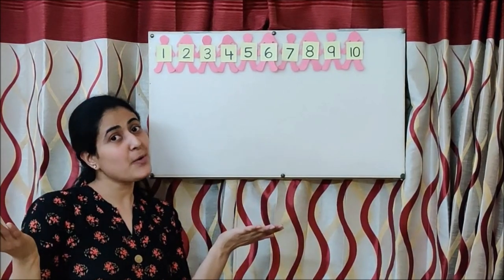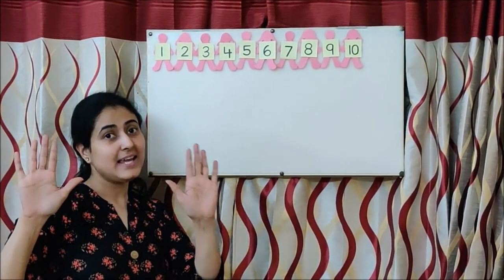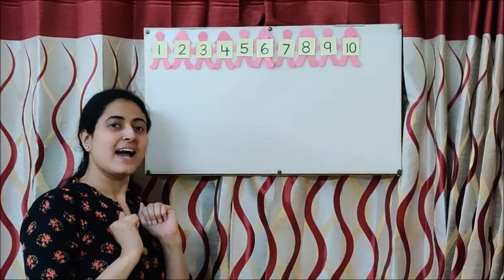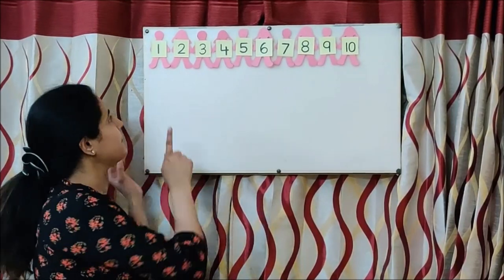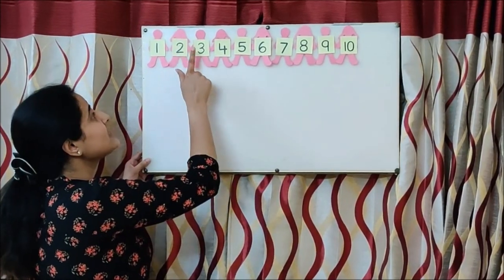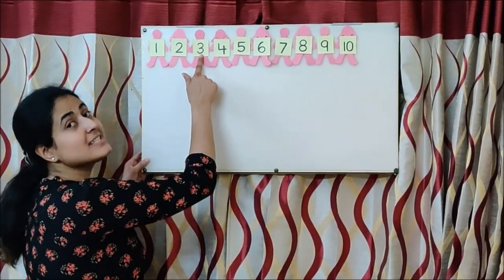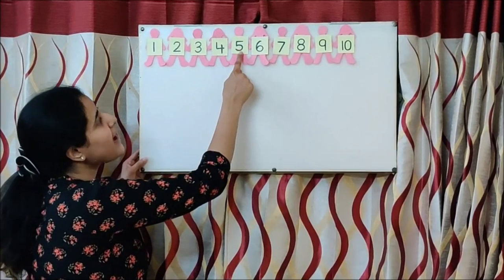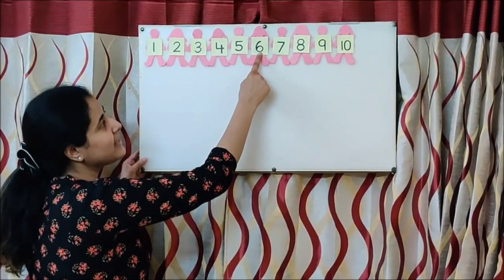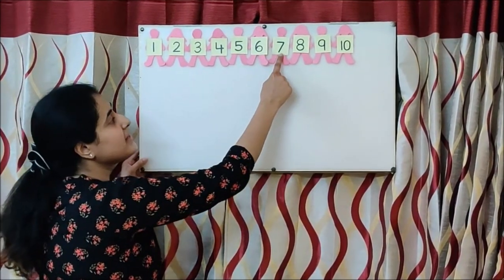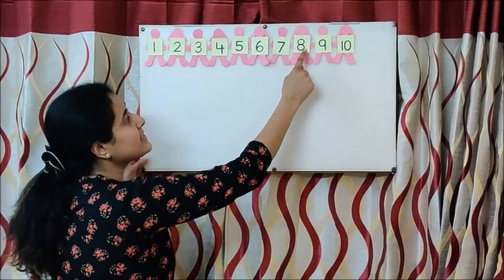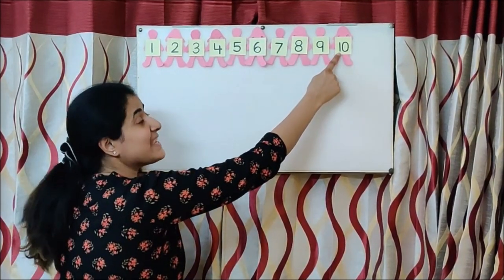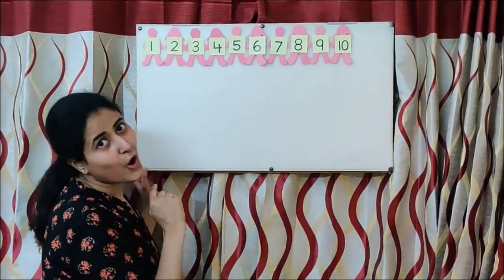And this is our poem. Ten Little Indians. So now let us sing again: One little, two little, three little Indians. Four little, five little, six little Indians. Seven little, eight little, nine little Indians. Ten little Indian boys.